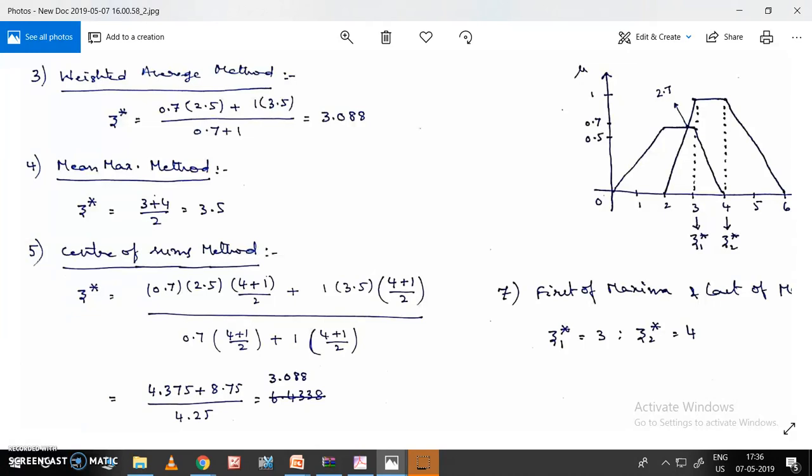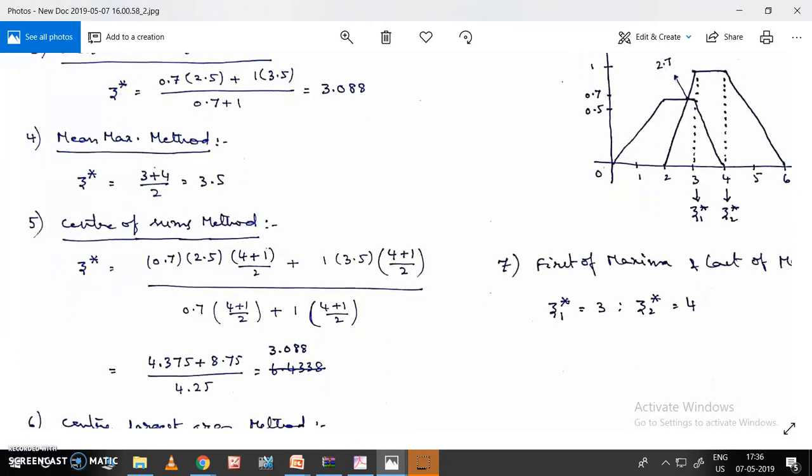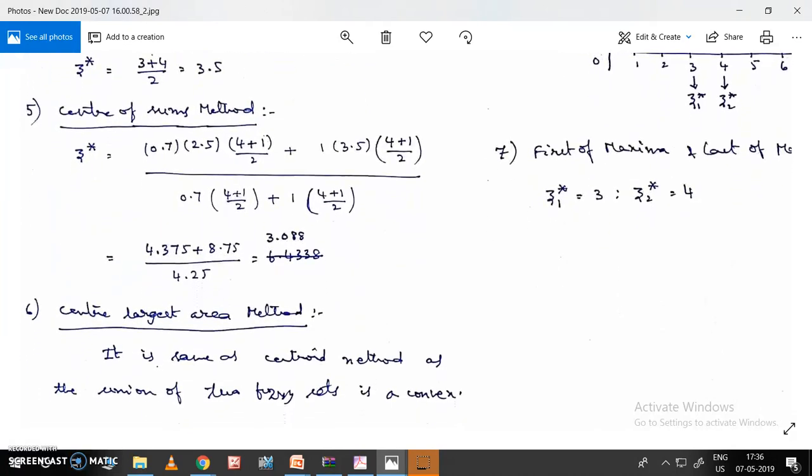In this case, both fuzzy sets have equal values so they cancel out, giving the same result. But it may not be the same for other cases.